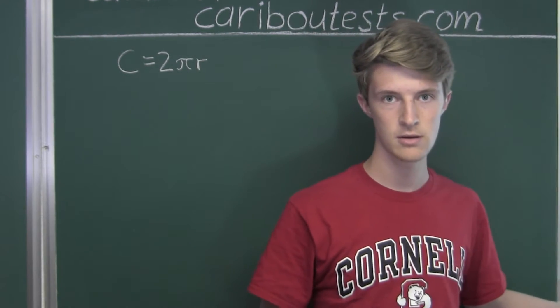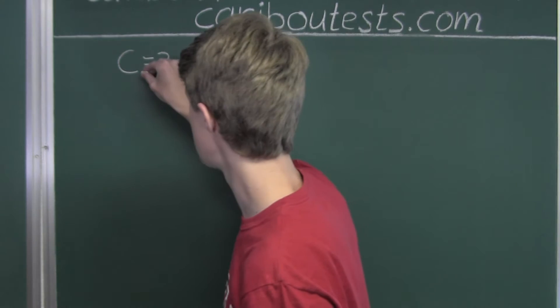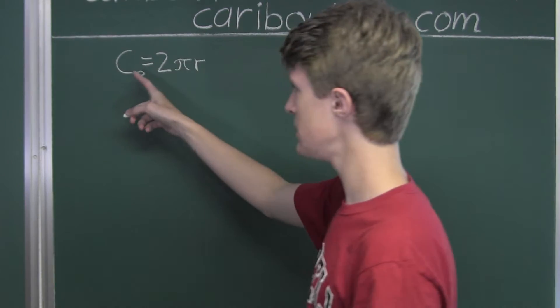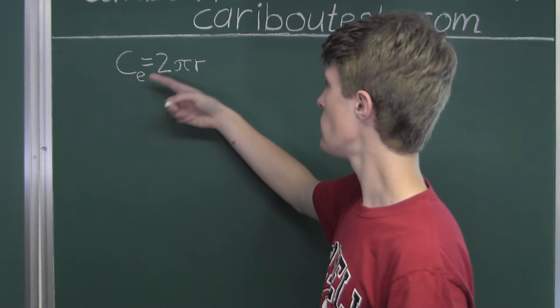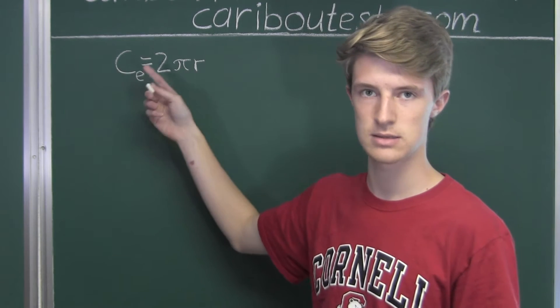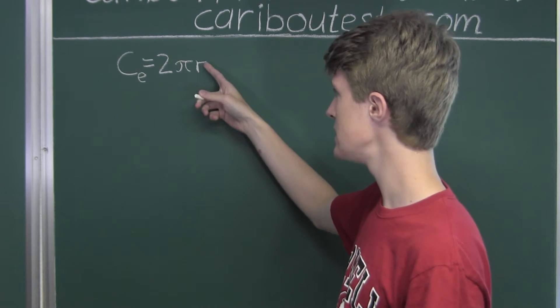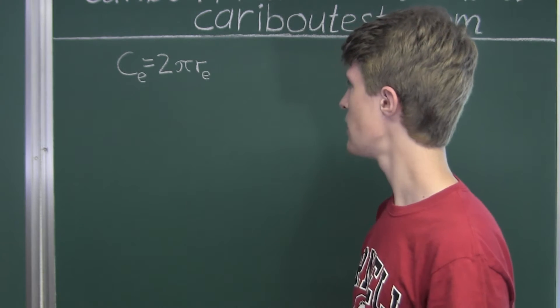Now in the case of the equator, we have the circumference of the equator, C sub E, which equals 2 times pi times the radius of the equator.